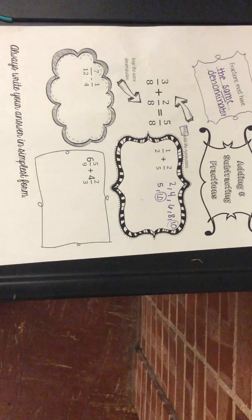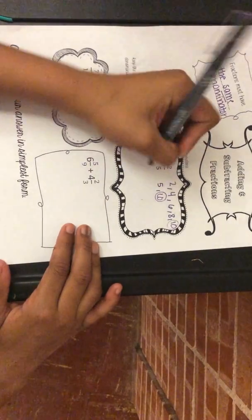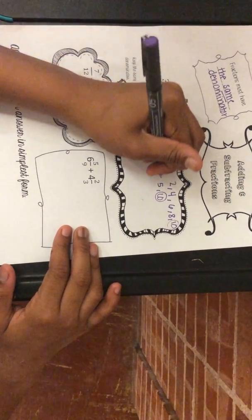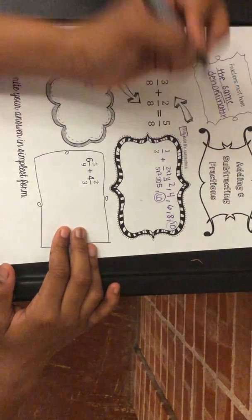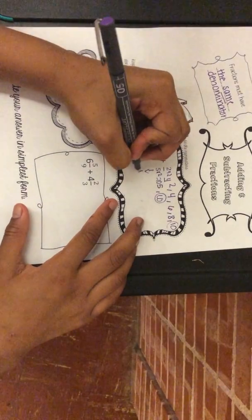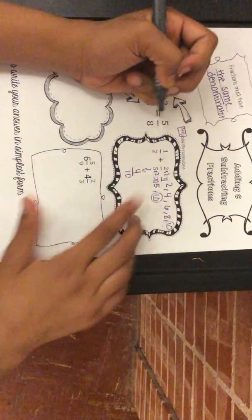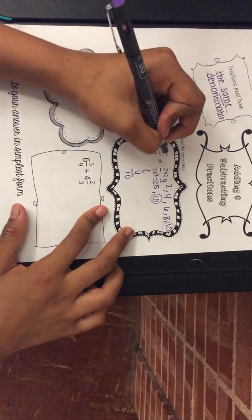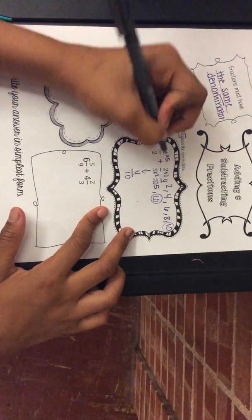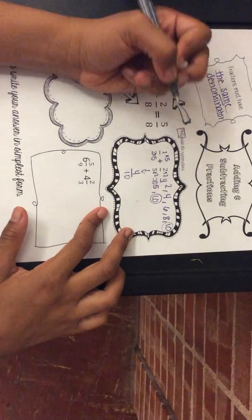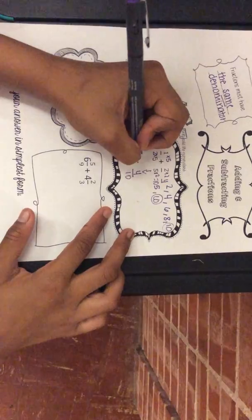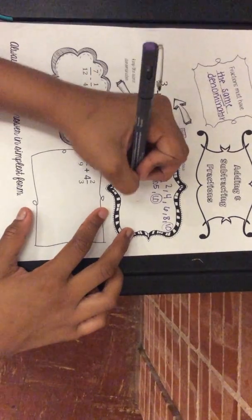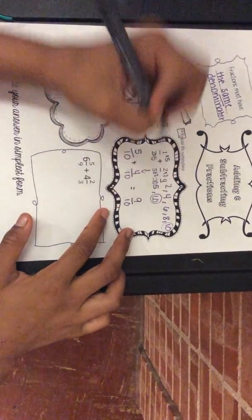Since they both reach ten, ten is the least common denominator. You're going to multiply the first fraction by two, since five times two equals ten, and two times two equals four — so that gives you four over ten. For the second fraction, multiply by five: one times five equals five and two times five equals ten, giving you five over ten.